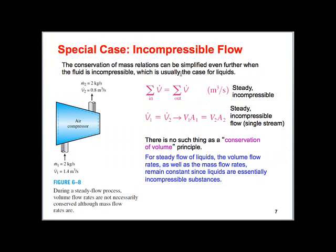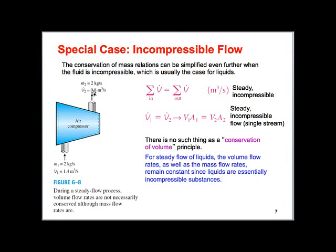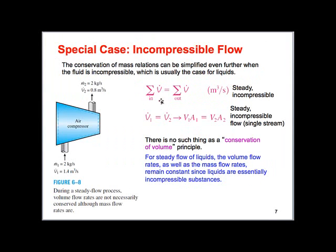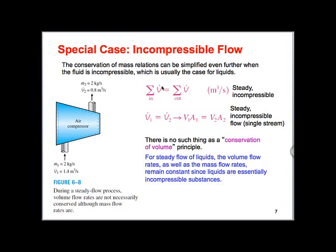For incompressible flow — where density does not change from inlet to exit — we can simplify rho·A·V₁ = rho·A·V₂ by canceling the densities. This gives us A·V in equals A·V out, meaning volumetric flow rate in equals volumetric flow rate out. It's very important to note there is no such thing as a conservation of volume principle; this is a special case only for incompressible, steady flow with no density variations.